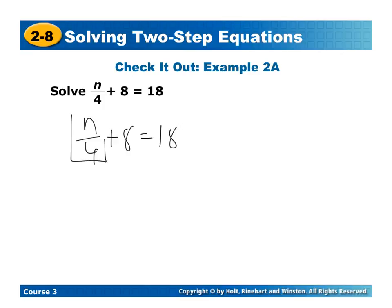So for me, once again, I'm identifying that variable term. I do the opposite. So since it's plus 8, I'm minusing 8. And now I have n over 4 is equal to 10. And I ask myself what's happening to the variable. I'm dividing by 4. So the inverse would be to multiply. And now n is equal to 40.